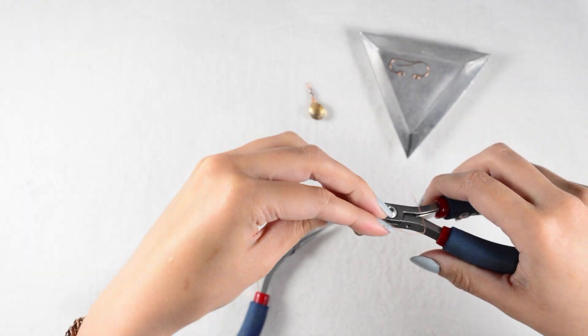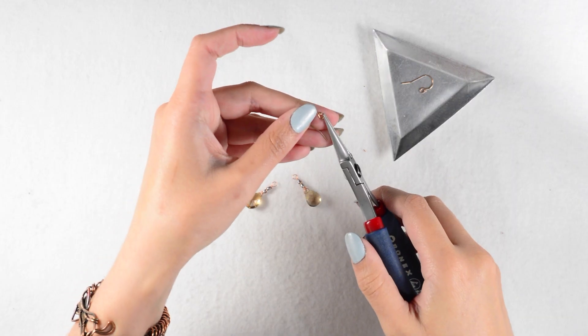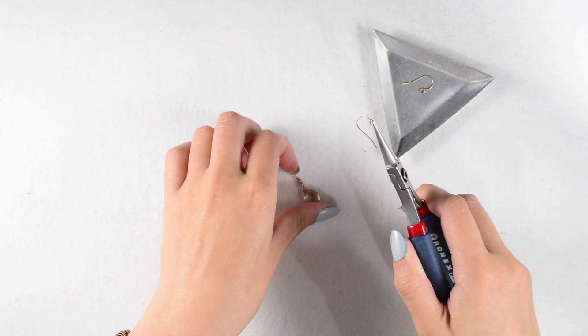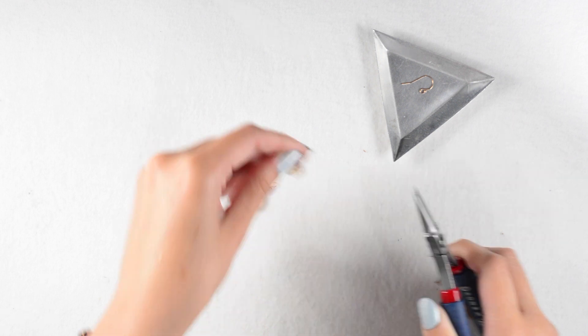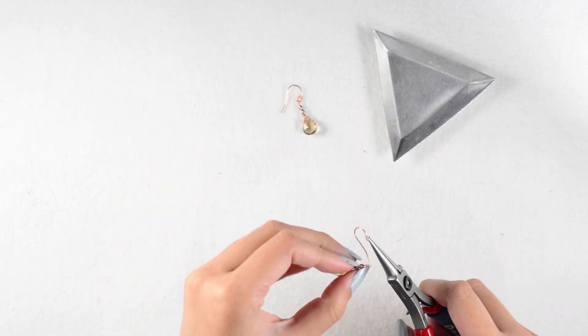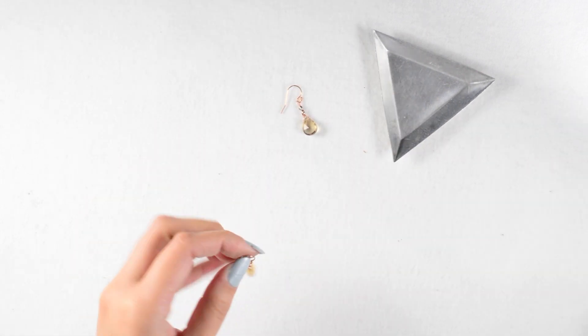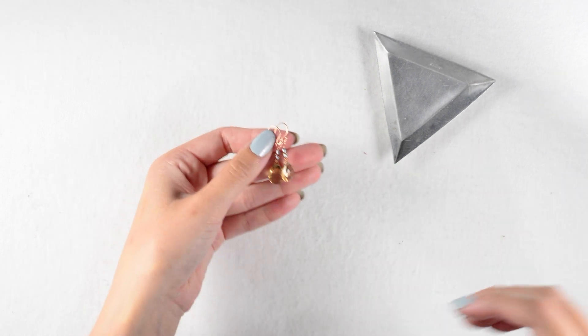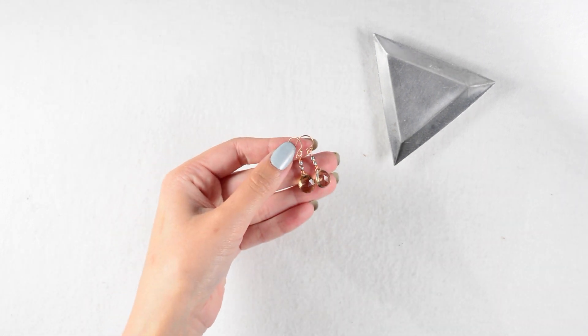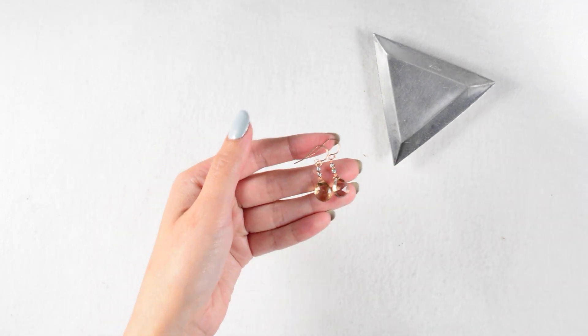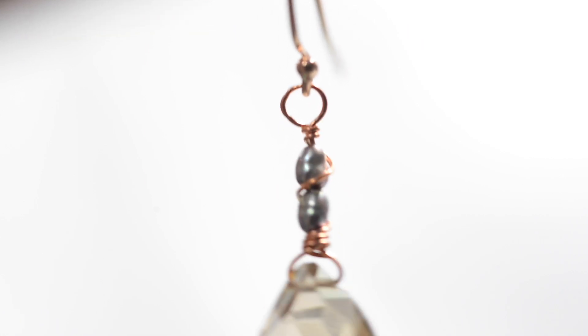Once I finish that coil and tuck my tail, I'll just attach my ear wires and I am all done. I love these earrings for everyday use because they're simple enough that they can go with anything really, but also have a unique personality because of that spiral.